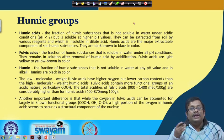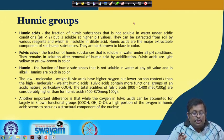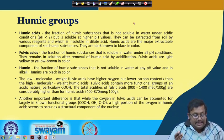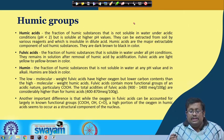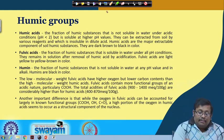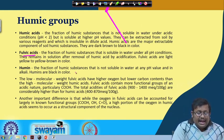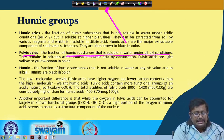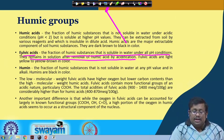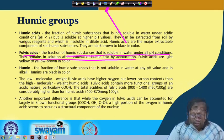Humic acid is the fraction of humic substances that is not soluble in water under acidic conditions, that is pH less than 2, but is soluble at higher pH values and can be extracted by various reagents. Fulvic acid is the fraction of humic substances that is soluble in water under all pH conditions and remains in solution after removal of humic acid by acidification. So fulvic acid is soluble under all pH conditions whereas humic acid is only soluble at higher pH values.